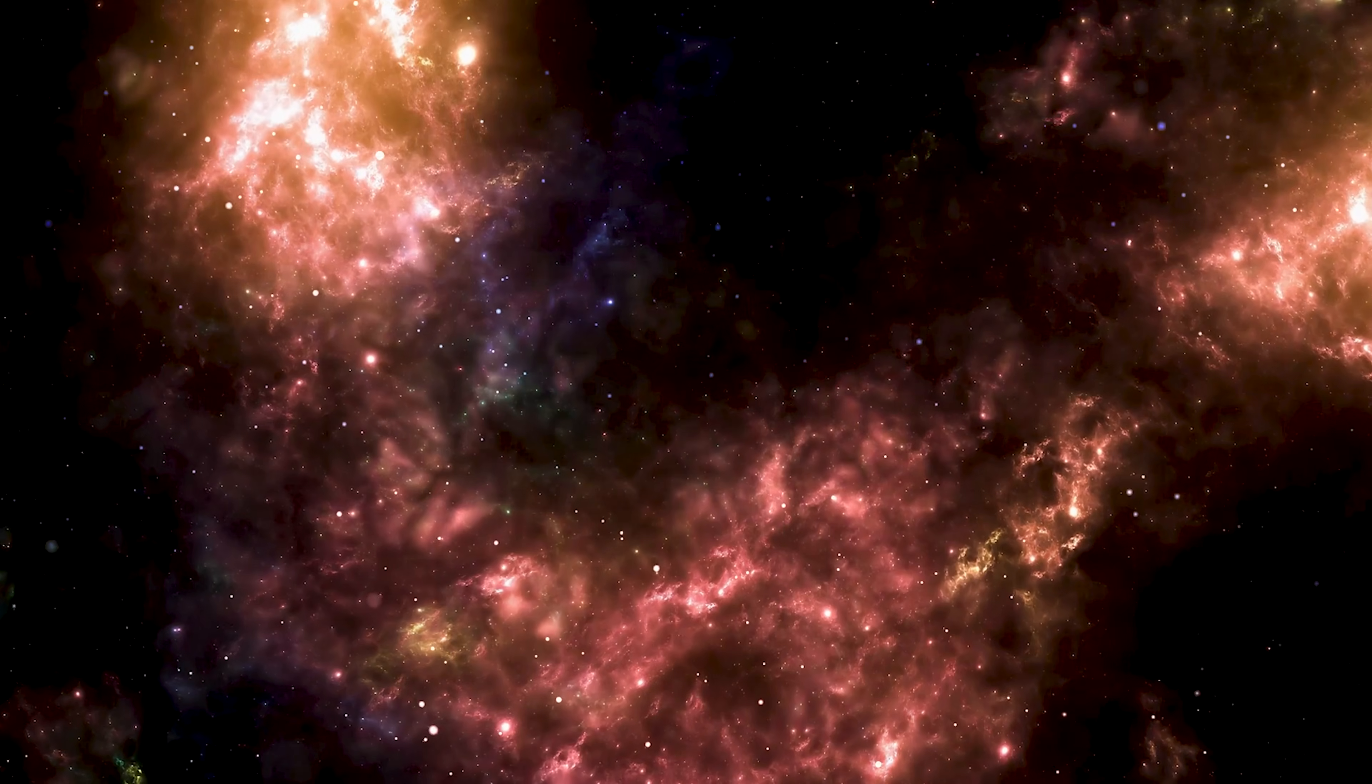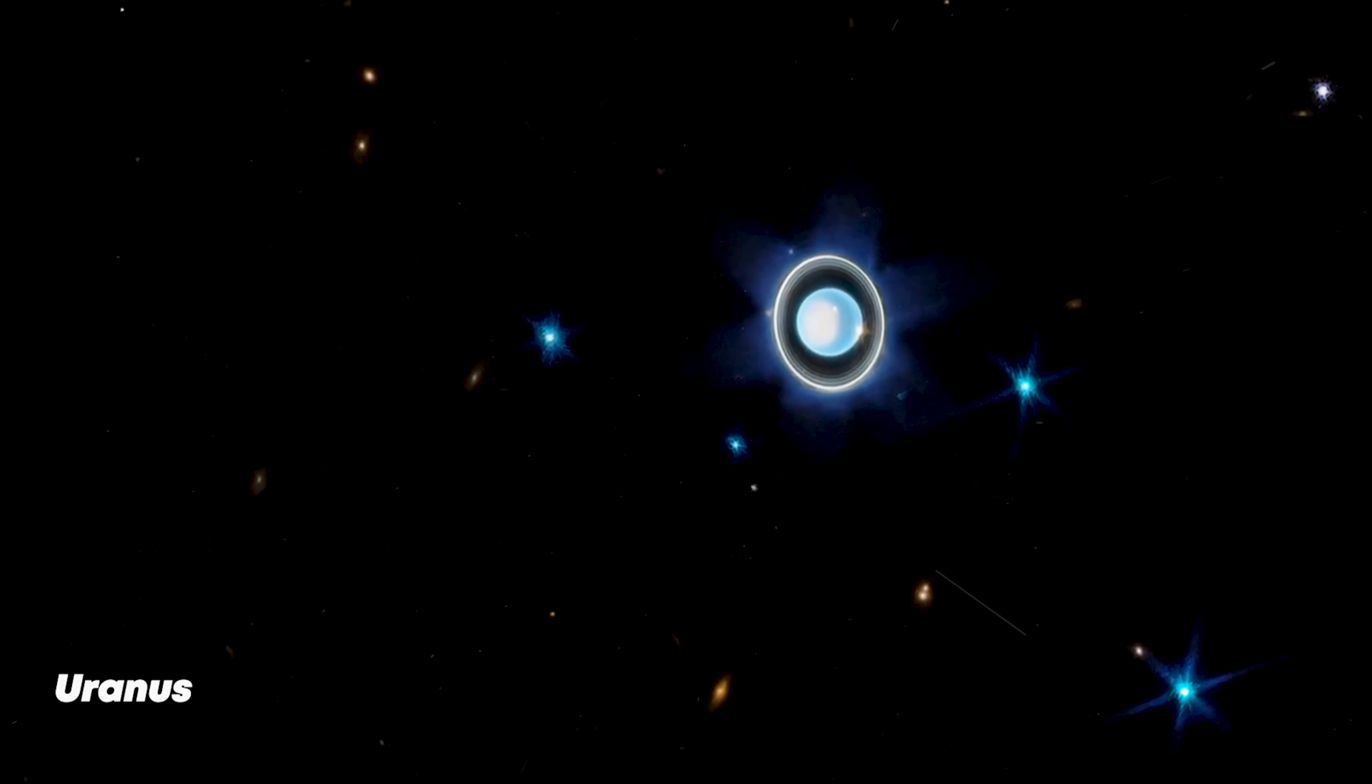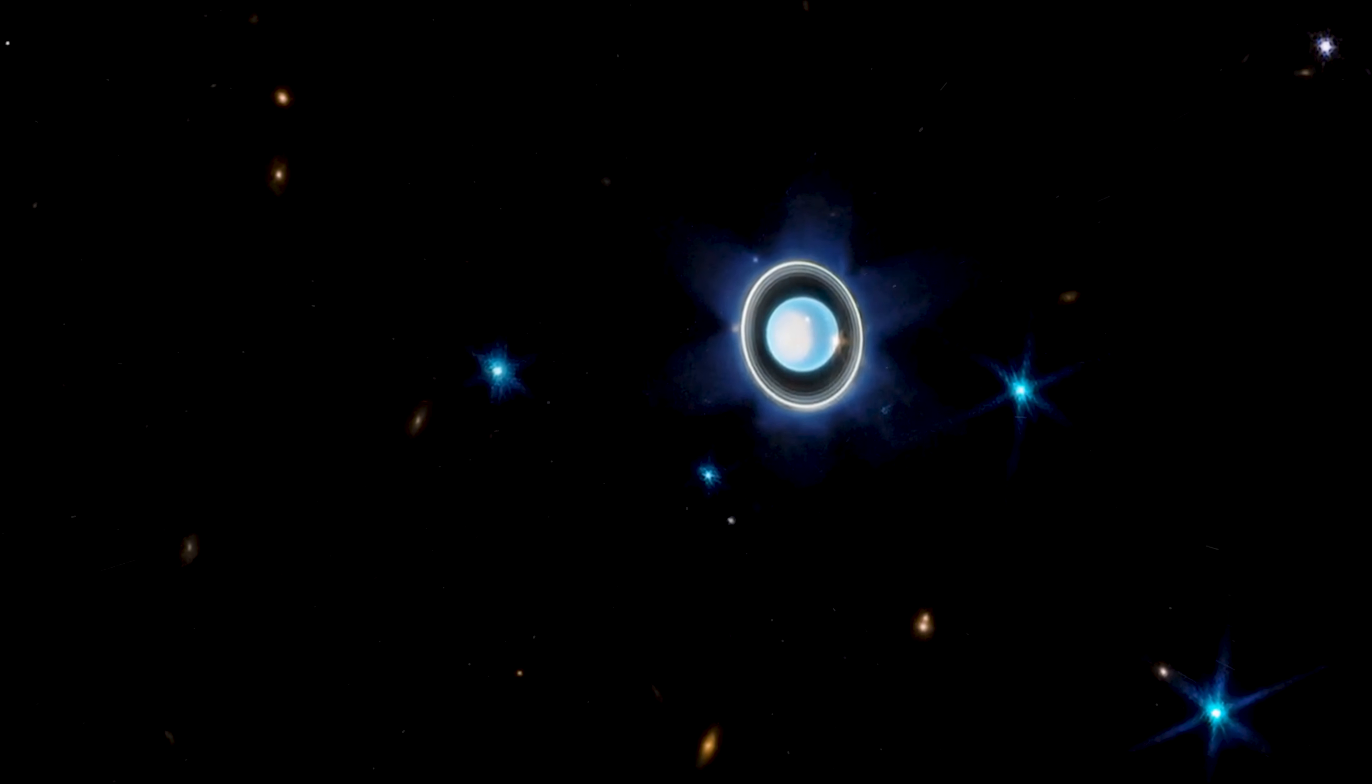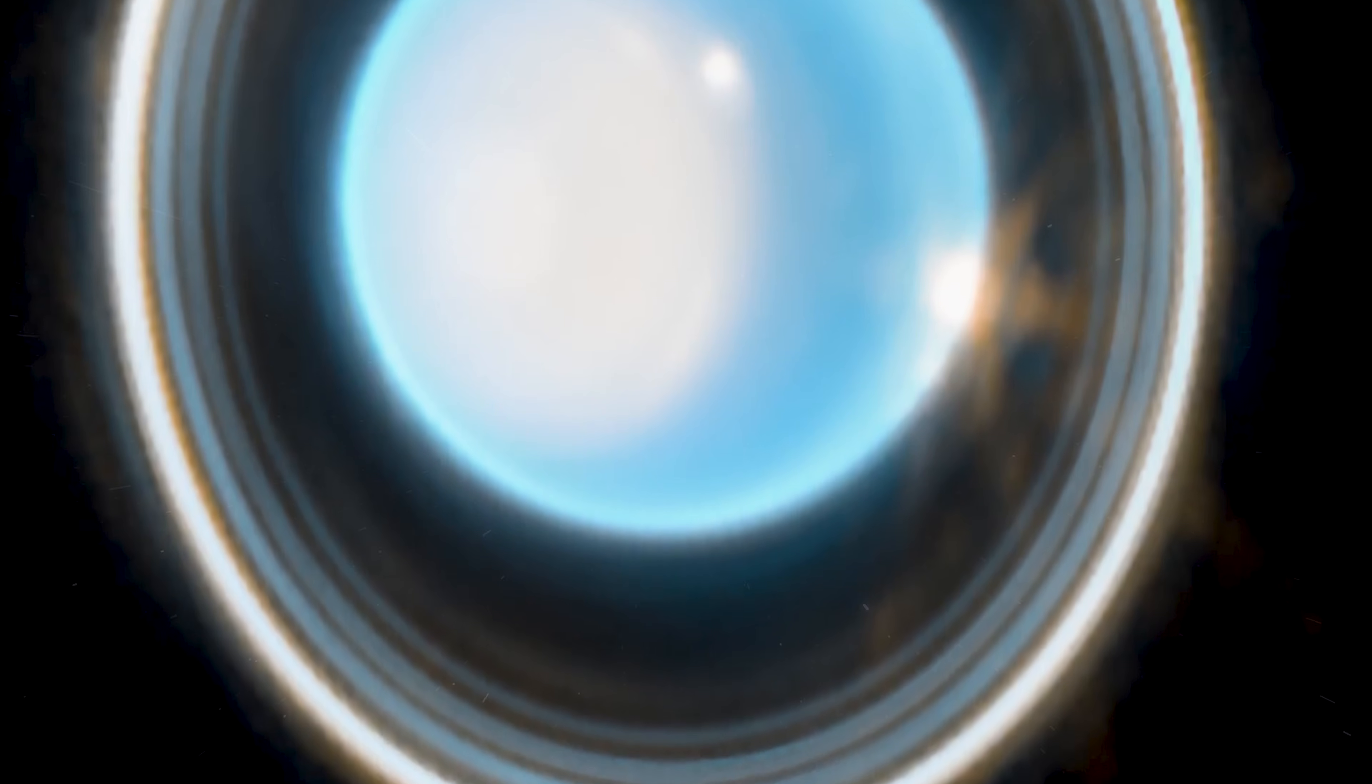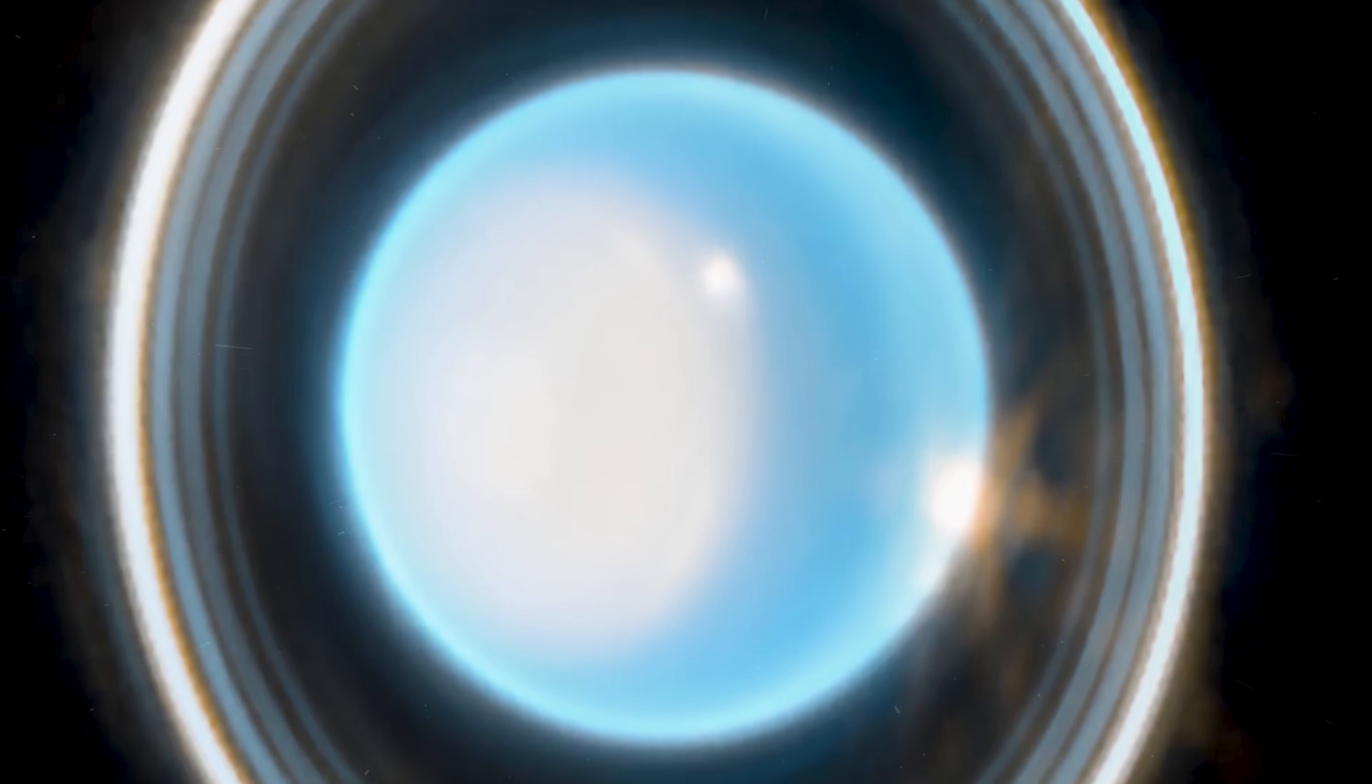One striking example comes much closer to home. When Webb turned its infrared eyes toward Uranus, it didn't just capture a prettier picture of a distant planet, it unveiled a world that looks almost alien compared to what we thought we knew. Rings glow with unexpected clarity, storms churn in the atmosphere and seasonal changes appear far more dramatic than previously observed. Uranus, once thought of as quiet and unremarkable, suddenly looks dynamic and complex.